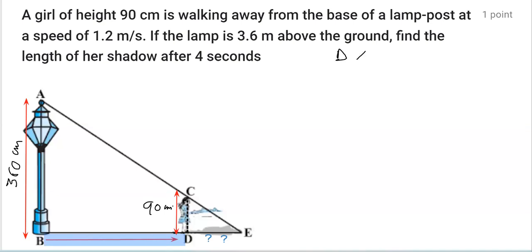We will be writing distance equals speed into time. We have to get the distance BD. Speed is 1.2 meter per second, and the time taken is 4 seconds, so that is into 4.